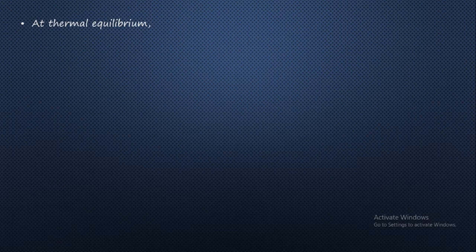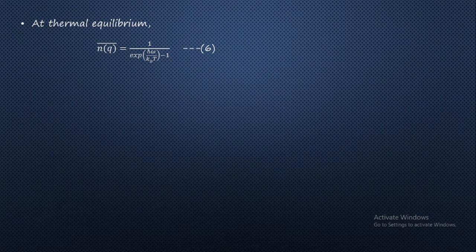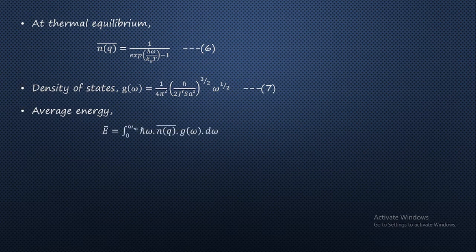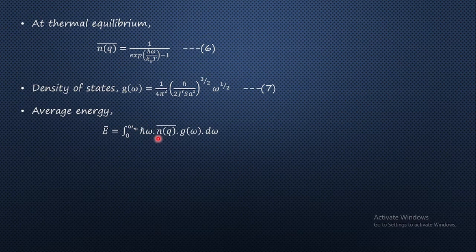Now let us consider the thermal equilibrium condition. At thermal equilibrium the average number of magnons is given by n̄(q) = 1 / [exp(ℏω / k_B T) − 1], according to Bose-Einstein statistics, because magnons are bosons. The corresponding density of states is g(ω) = (1/4π²) × (ℏ / 2J'Sa²)^(3/2) × √ω. To find the average energy, we have: Ē = ∫₀^(ω_m) ℏω × n̄(q) × g(ω) dω.